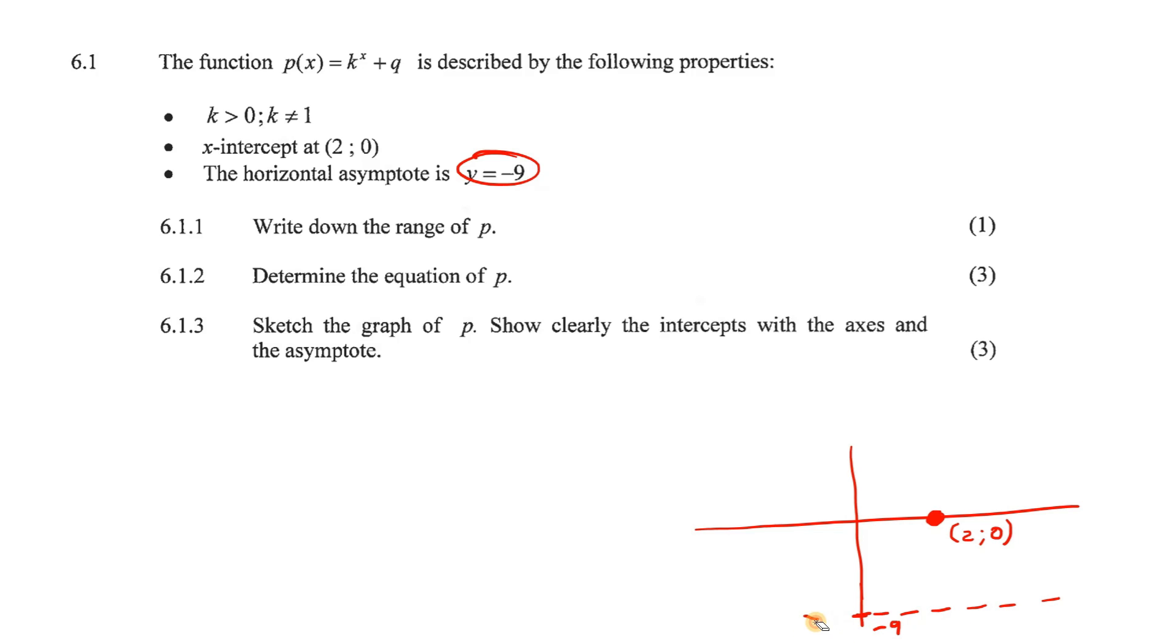If you've watched my videos on exponentials, you would know that the dotted line, the asymptote, is also this value over here. So that's really nice, because now we have that already. We can already say that this is minus 9.